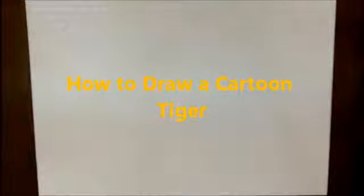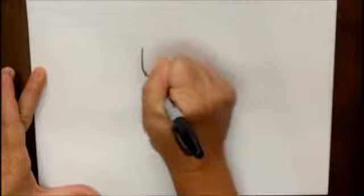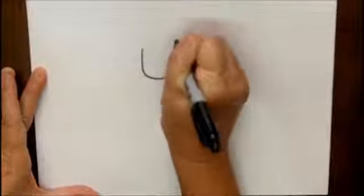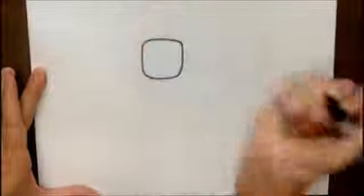Hi there, today I'm going to show you how to make a cartoon tiger. So let's get started. We're going to start by making a square, and it's going to be a square with rounded corners. That's going to be his head.